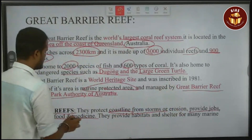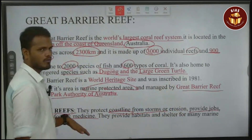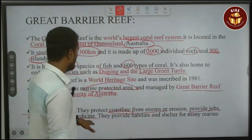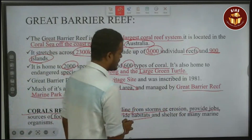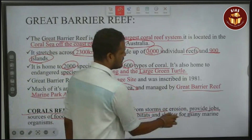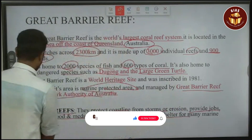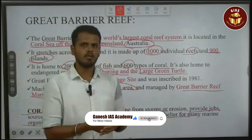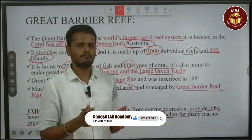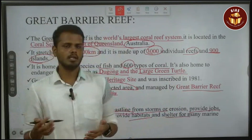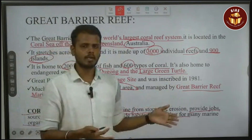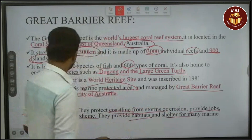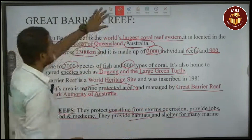There are sources of food and medicine. It also provides habitat and shelter for many marine organisms, including fish species such as zooplankton and macrophytes.